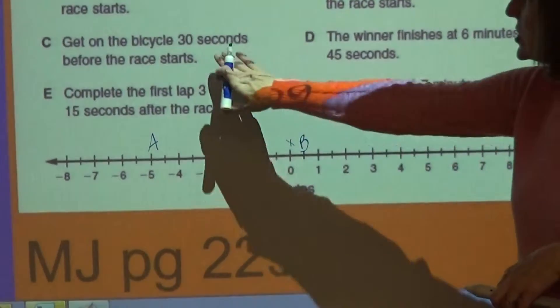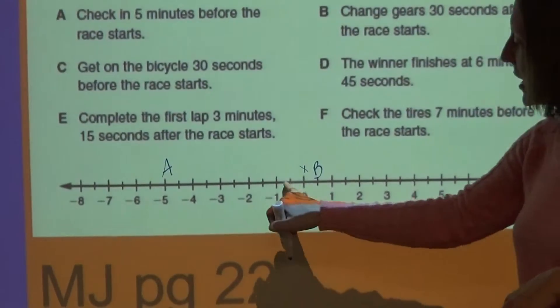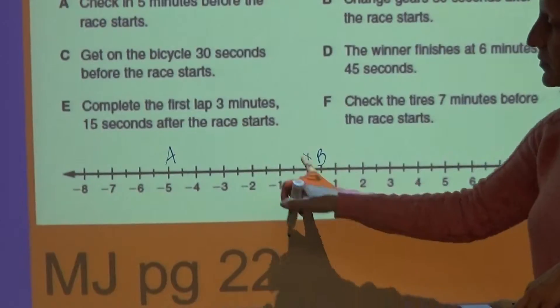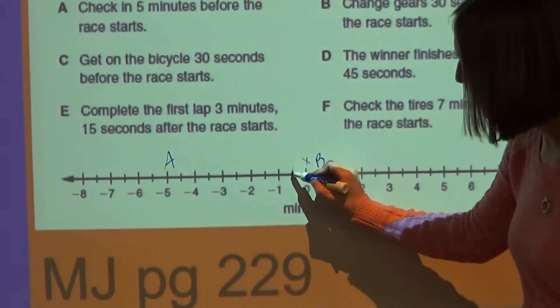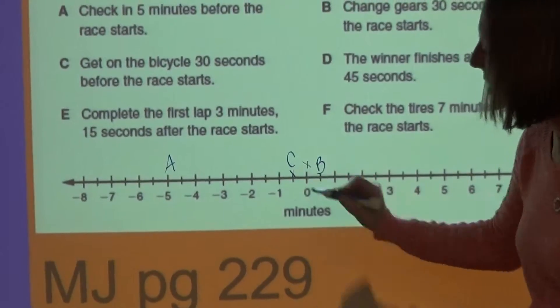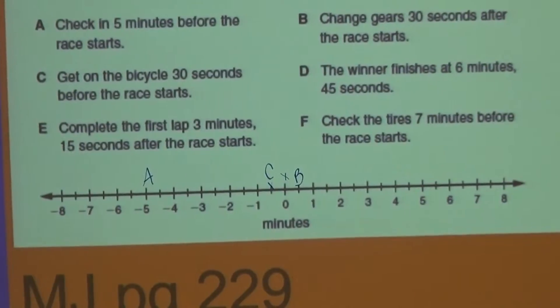And then we can do one more together. If you get on a bicycle, 30 seconds before the race starts. Again, before the race would be moving toward the negative part of the number line. 30 seconds, again, would be right here. So this would be letter C. Then you'll go through and look at D, E, and F on your own and check that in your math journal.